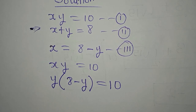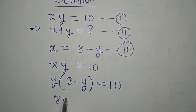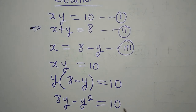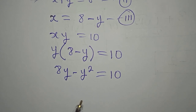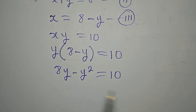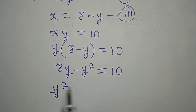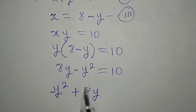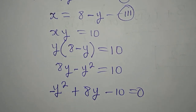At this point, we can open the bracket. So we have 8y minus y squared equals 10. And I'll ensure that the one with the highest power appears first. So I'm going to write negative y squared, then plus 8y. I want this to come to the left, so we have minus 10, and this is equal to 0.